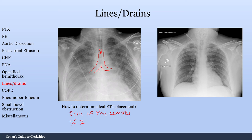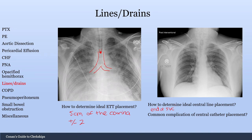Here we have a central line going in from the right internal jugular vein, terminating right here. How do you determine ideal central line placement? For this IJ, it should terminate in the superior vena cava. A common complication of central catheter placement, especially IJV lines, is pneumothorax — because you're cutting in up here where the lung apex is, which could accidentally get punctured.